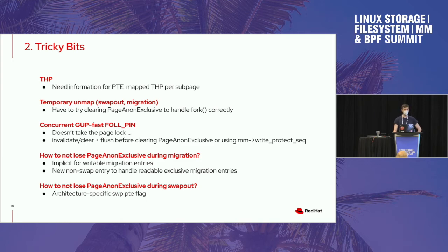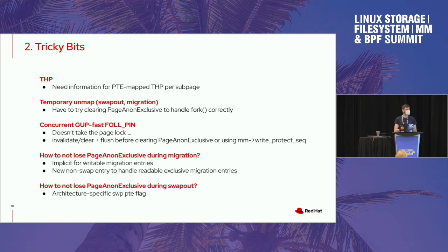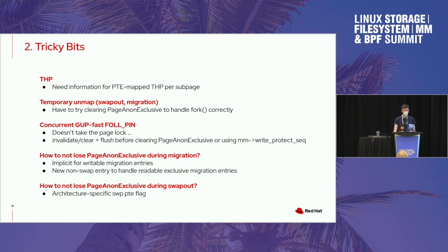Transparent huge pages are nasty. The issue is that as soon as you PTE-map a transparent huge page, you actually need the exclusive information per sub-page, because a process could do nasty things — it could remap parts of a transparent huge page to a different page table, or set MADV_DONTFORK so a certain part of your VMA is not included in a fork event. You can come up with quite nasty conditions where only parts of a transparent huge page are mapped in one process and the rest in another. We need that information per sub-page, but only as soon as we don't natively map a transparent huge page as a huge page — only when we map it as a PTE-mapped transparent huge page.